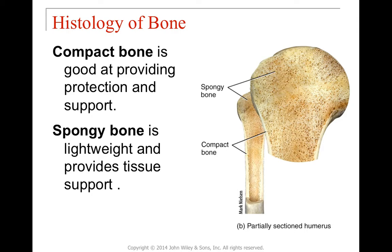Looking at bone histology, there are two major types of bone. Compact bone looks fairly solid — it's very strong and provides protection and support. It actually grows under pressure, so using your bones to carry heavy weights over time makes it stronger. Spongy bone is lightweight and contains regions where osteoclasts and osteoblasts are located, providing internal tissue support.